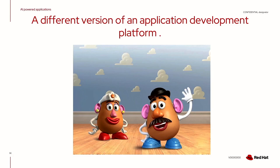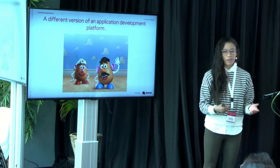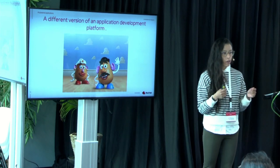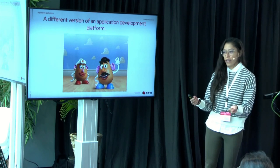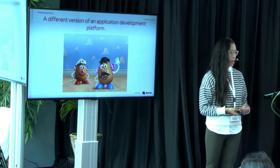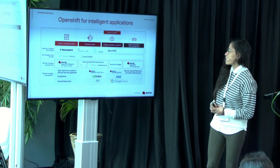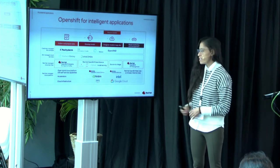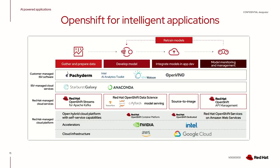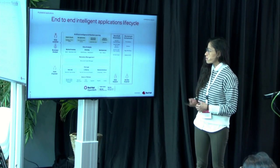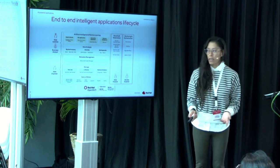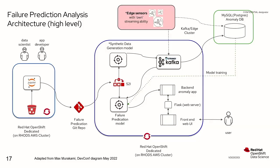I like to think of OpenShift as the Mr. Potato Head of platforms. You have multiple pieces that all fit well together and work well together. Depending on which ones you use, you have a different configuration — you can have an intelligent application setup. For intelligent applications, these are the pieces: support for GPUs, public clouds, different tools for model serving, and tools to integrate your models, each for the different personas. Most importantly, they all work on the same platform and apply the same practices.